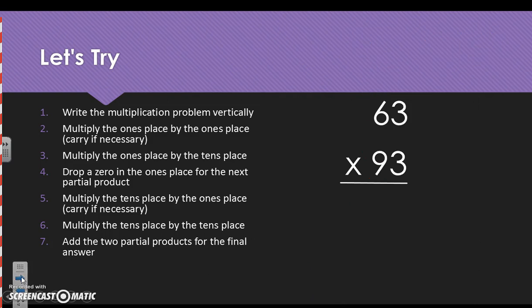I believe this is the last one we're going to do together. So ones times the ones. 3 times 3 is 9. Ones times the tens. 6 times 3 is 18. Drop a 0. 9 times 3 is 27. Carry the 2. And then 9 times 6 is equal to 54, plus 2 that we carried is 56.